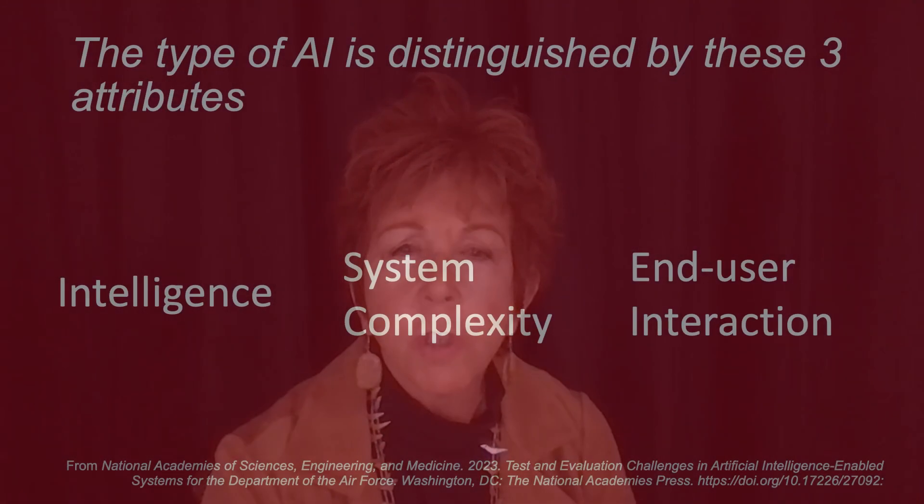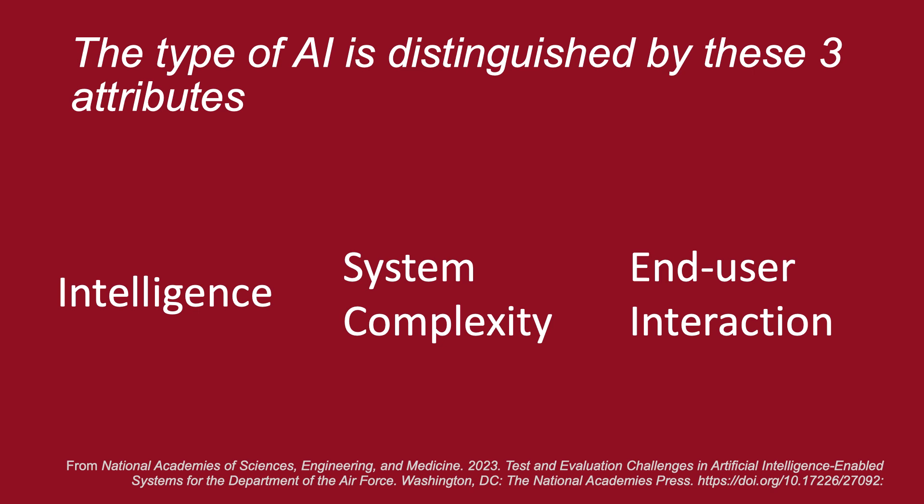AI can be thought of as falling into three types based on the overall structure, and likewise, artificial and intelligent robots can fall into those same categories. You're looking at it by the dimensions of scope of intelligence, system complexity, and end-user interaction.